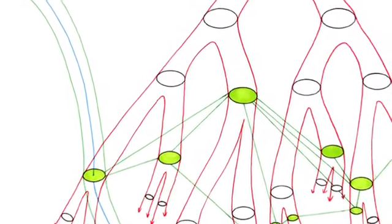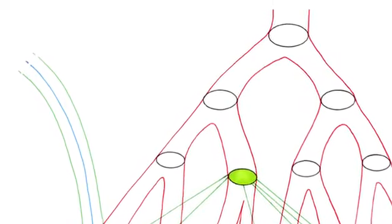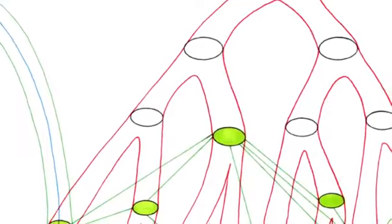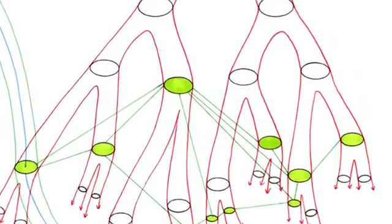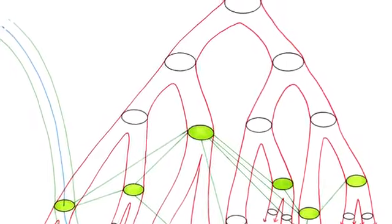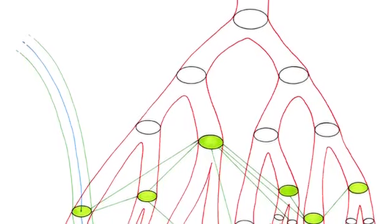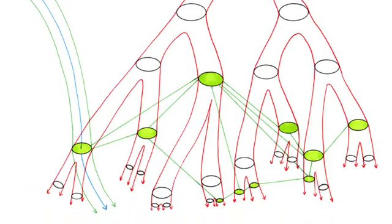It could be said the orchid imitates the wasp, reproducing its image in a signifying fashion. Mimesis, mimicry, lure, etc. But this is true only on the level of the strata. At the same time, something else entirely is going on: not imitation at all, but a capture of code, surplus value of code, an increase in valence, a veritable becoming. A becoming wasp of the orchid and a becoming orchid of the wasp. The two becomings interlink and form relays in a circulation of intensities, pushing the deterritorialization even further.